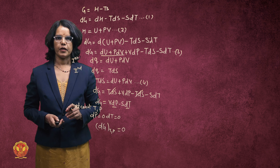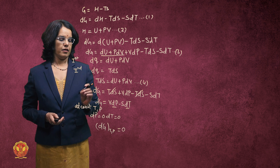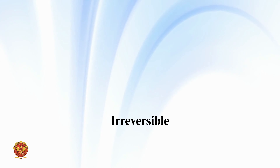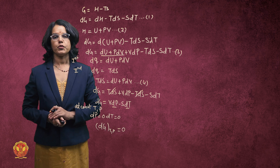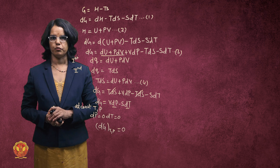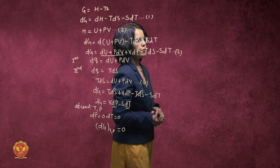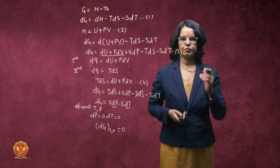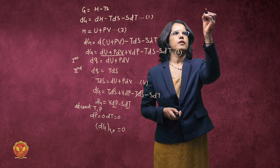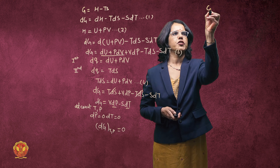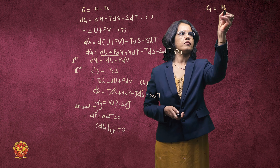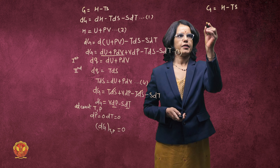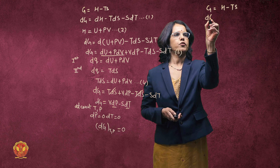Now we can see that for an irreversible process, the situation is different. For an irreversible process, what is the value of dG? Starting from G = H - TS, we get dG = dH - TdS - SdT.